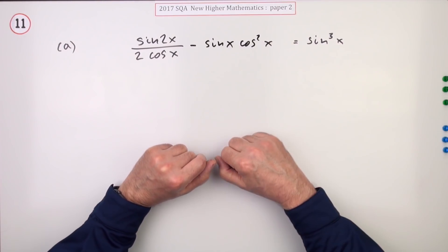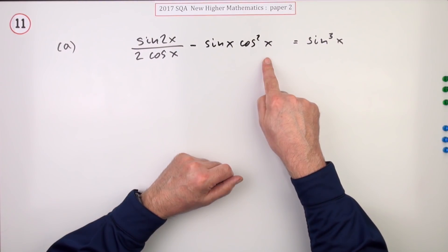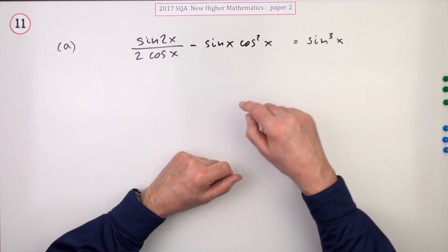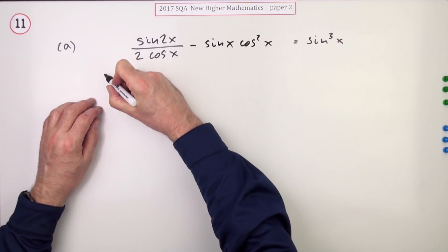It's not an equation which is only true for certain values of x, in which case you've got to solve it. If you try and solve an identity, you'll just end up with zero equals zero because the two parts are identical. Anyway, the usual technique is start with the more complicated one.